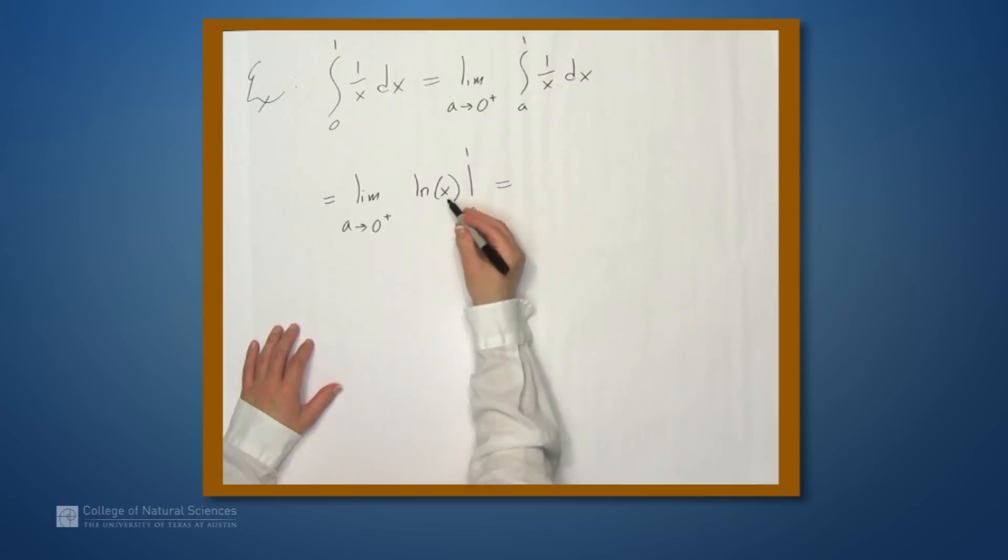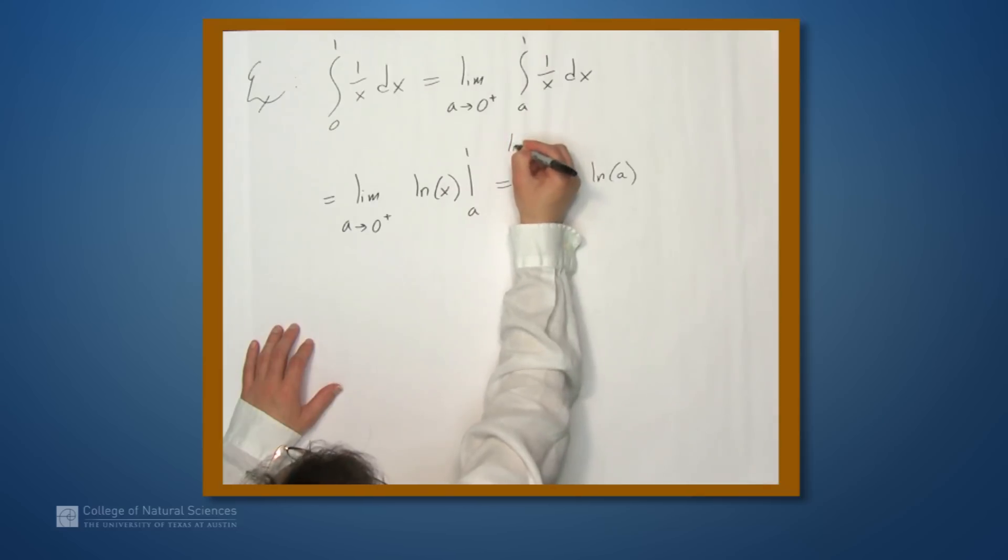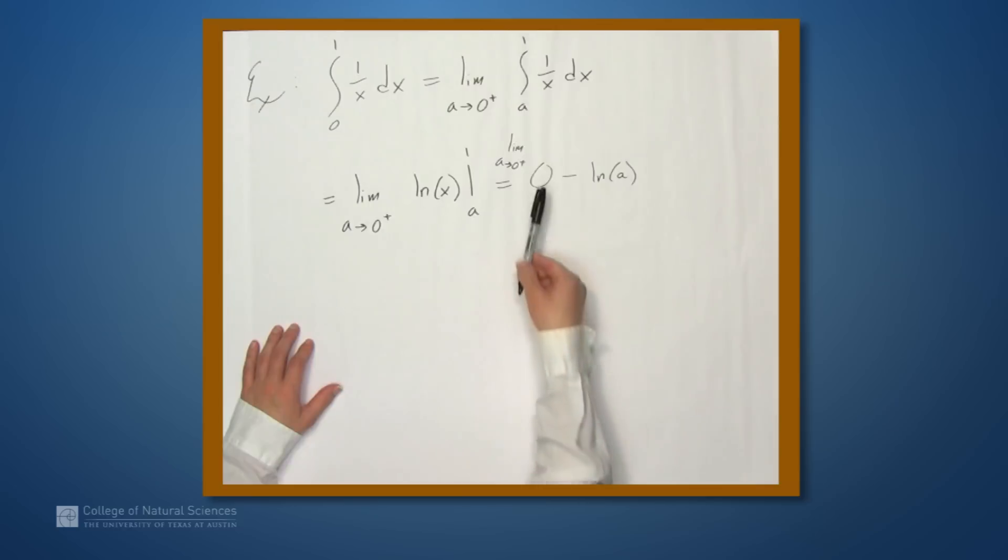Well, when we evaluate natural log of 1, we get 0. And this is minus natural log of a. Of course, I should be writing limit as a approaches 0 from above. So we get 0 minus the natural log of a. Well, as we send a to 0, natural log of a approaches negative infinity. So this is infinity.